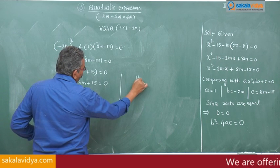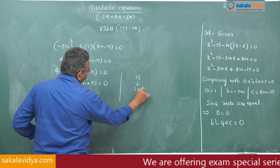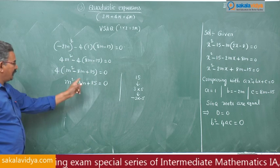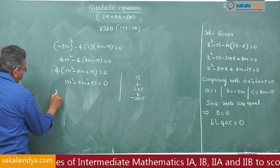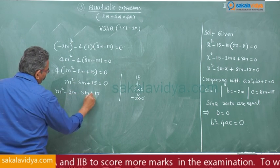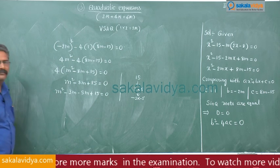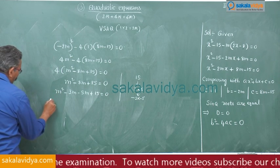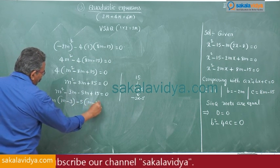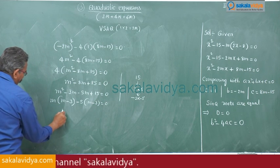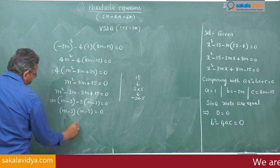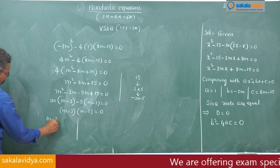The factors of 15 are 3 and 5, or minus 3 and minus 5. So 8m can be split as minus 3m minus 5m. We get m squared minus 3m minus 5m plus 15 is equal to 0. Taking m common: m minus 3, and taking 5 common: m minus 3 is equal to 0. So we have m minus 3 times m minus 5 is equal to 0, giving m is equal to 3 or m is equal to 5.